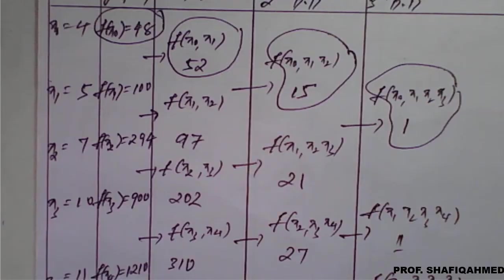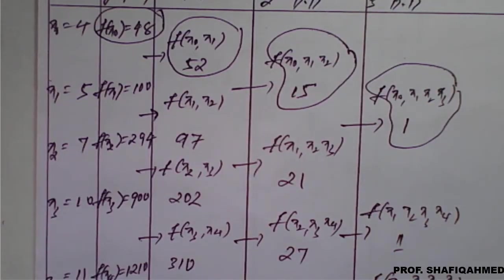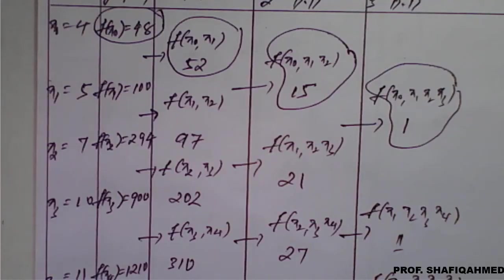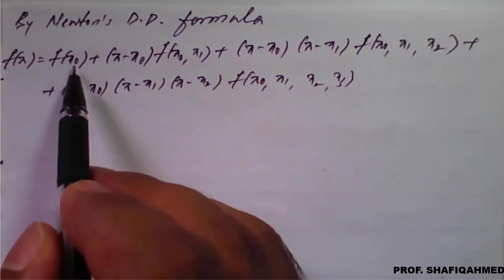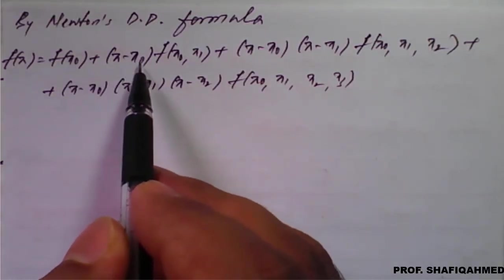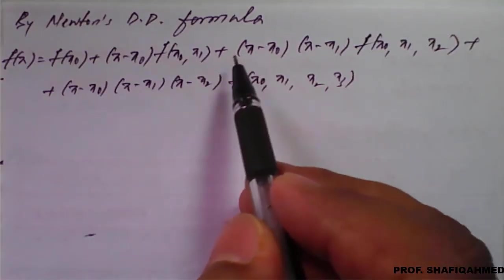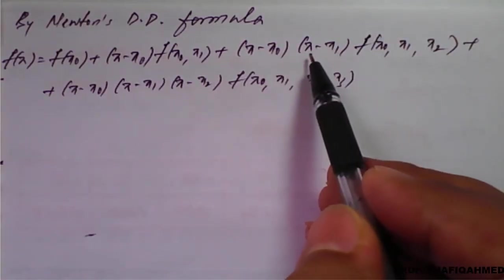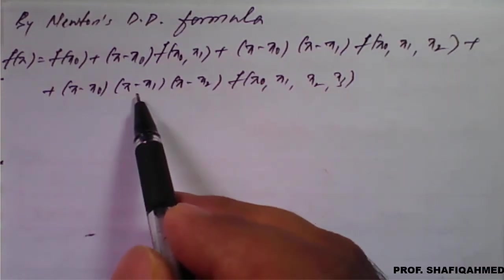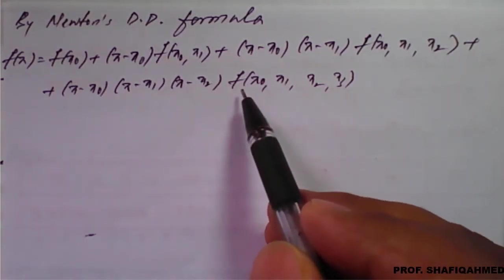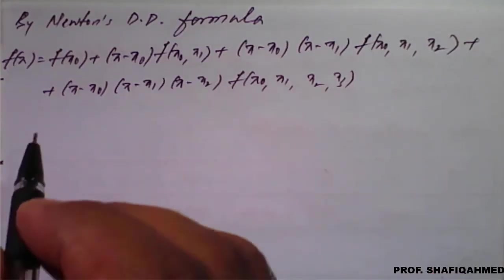Using these values, we will put them into Newton's divided difference formula and first get the polynomial. The formula is: f(x) = f(x0) + (x − x0)·f(x0, x1) + (x − x0)(x − x1)·f(x0, x1, x2) + (x − x0)(x − x1)(x − x2)·f(x0, x1, x2, x3). Then in that polynomial we will find the required solutions.